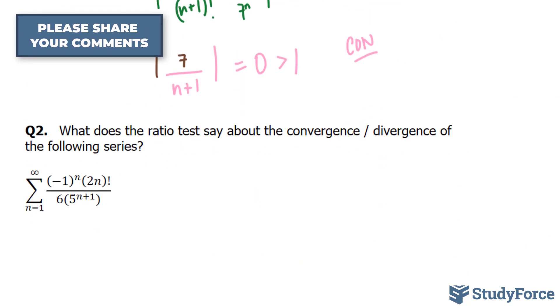Moving on to question number 2. What does the ratio test say about the convergence divergence of the following series? This one's slightly more complicated because there are more factors in this series. But the steps remain the same.